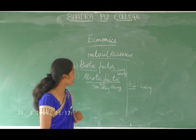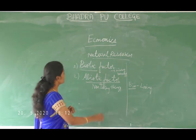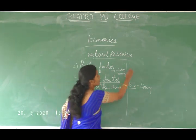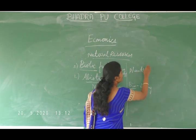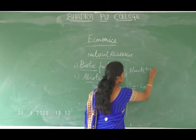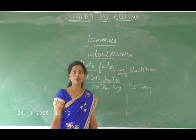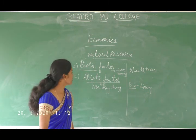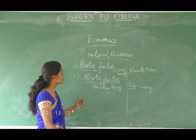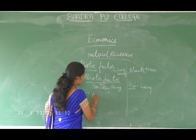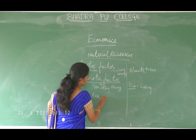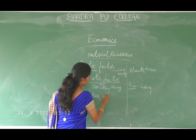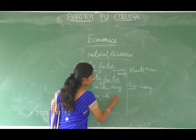What are examples of biotic factors? For biotic factors, you can take plants, trees, human beings, etc. For non-living things — abiotic factors — examples include air, water, heat, etc.